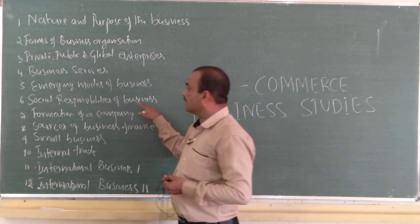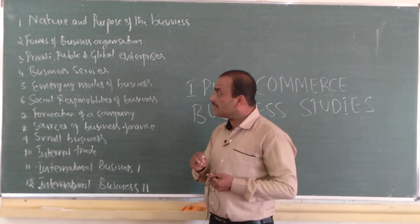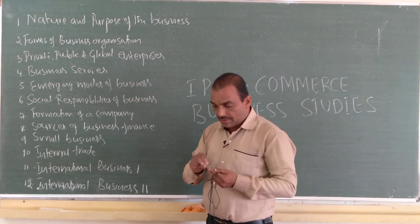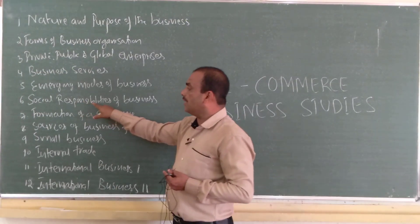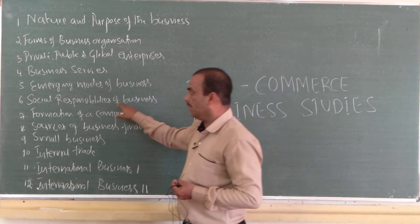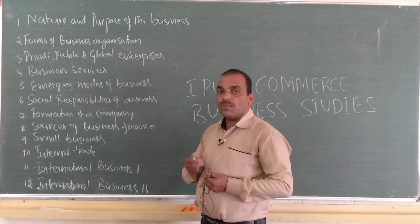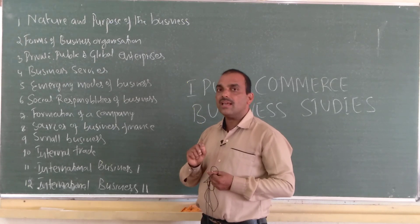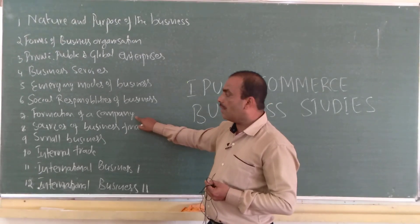The sixth chapter is Social Responsibility of Business. Our basic assumption is that business means earning of profit. Yes, business has the objective of earning profit, but it also has social responsibility. Next is Formation of a Company, which means the joint stock company and the various legal procedures involved in forming a company.